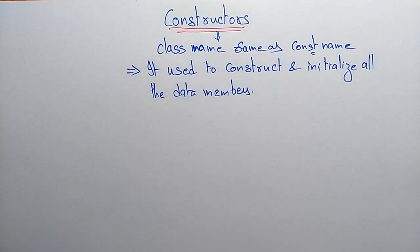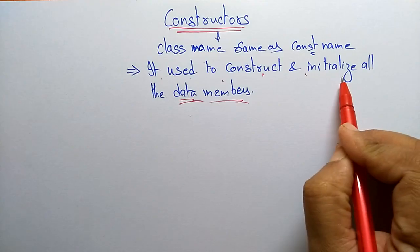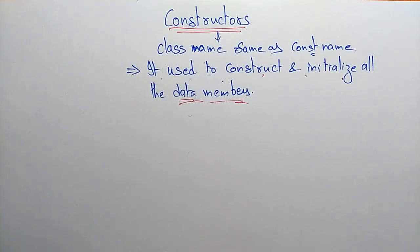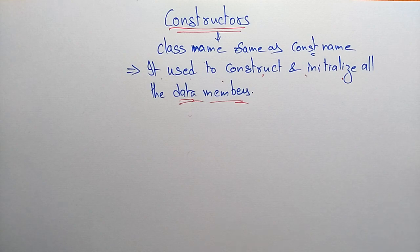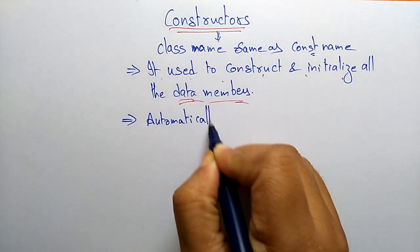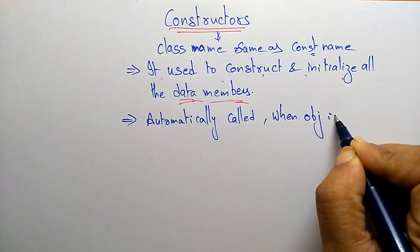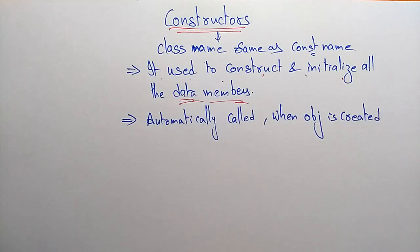We call it a constructor because we are constructing the data members — that is, declaring and initializing the variables used in the program. The constructor name, which is the function name, is the same as the class name. It is automatically called when an object is created, and it has no return value.